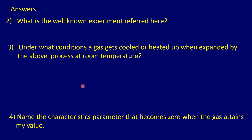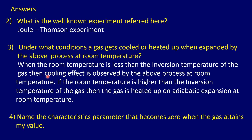Now the answers to the other questions. Number 2: What is the well-known experiment referred here? The Joule-Thomson experiment. Number 3: Under what conditions does a gas get cooled or heated up when expanded by the above process at room temperature? When room temperature is less than the inversion temperature of the gas, a cooling effect is observed. If room temperature is higher than the inversion temperature, a heating effect is observed on adiabatic expansion. Number 4: Name the characteristic parameter that becomes zero when the gas attains my value — that is the Joule-Thomson coefficient.